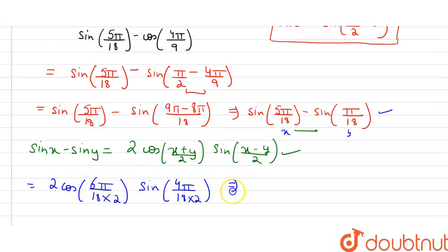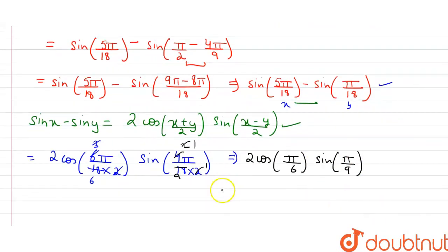So it is equal to, here we cancel it by 3. We will cut this 18 with 6. So it is equal to 2 cos π/6 and here it is 2, 1, it goes with 2 and 2 with 9 into sin π/9. And we know that the value of cos π/6 is root 3 upon 2. So it is root 3/2 into sin π/9. This 2 is cancelled by this 2. So at the last it is equal to root 3 sin π/9 which is nothing but equal to our RHS.